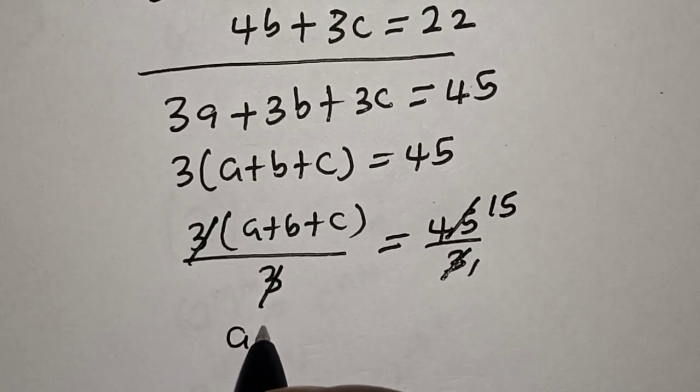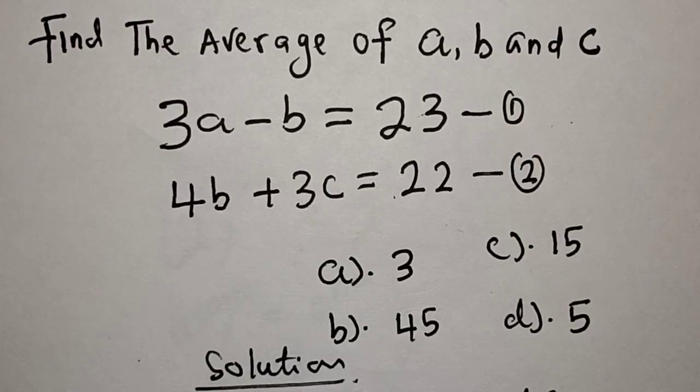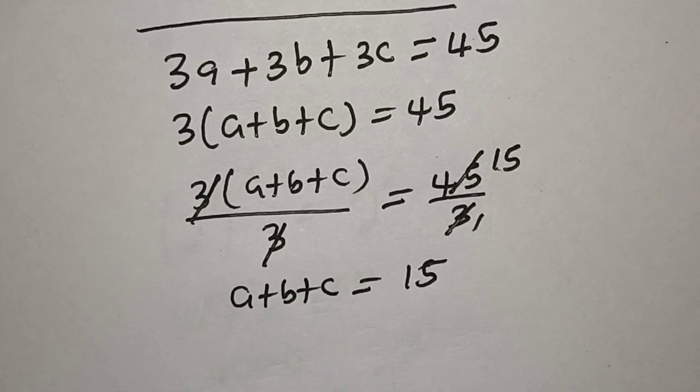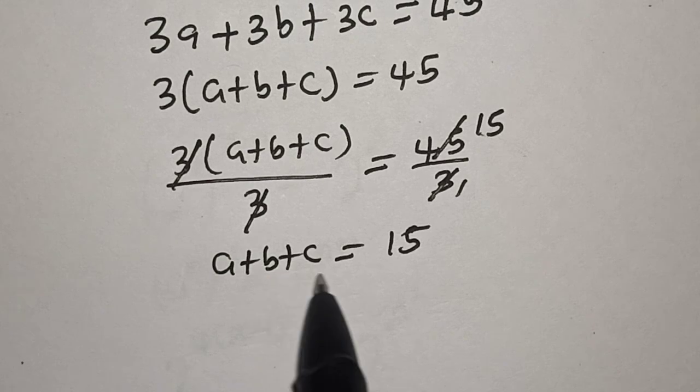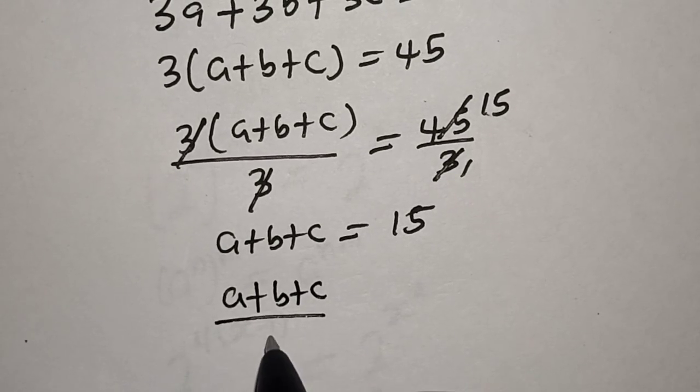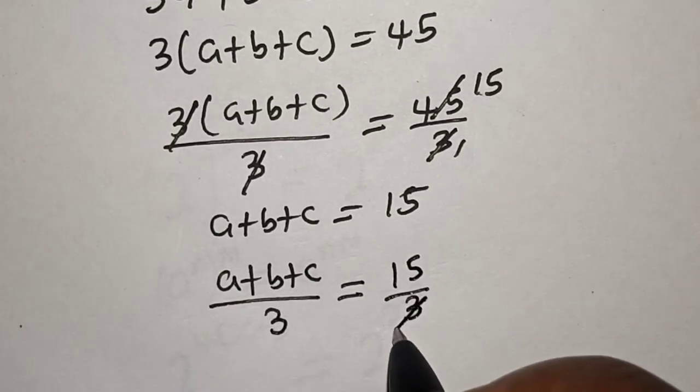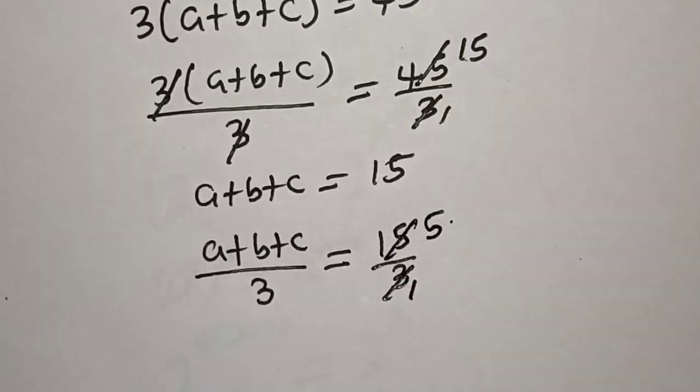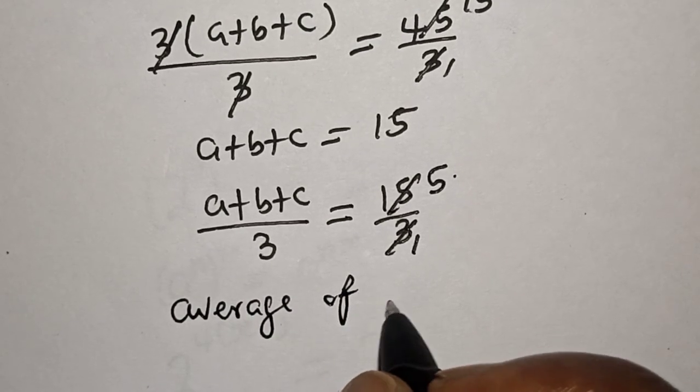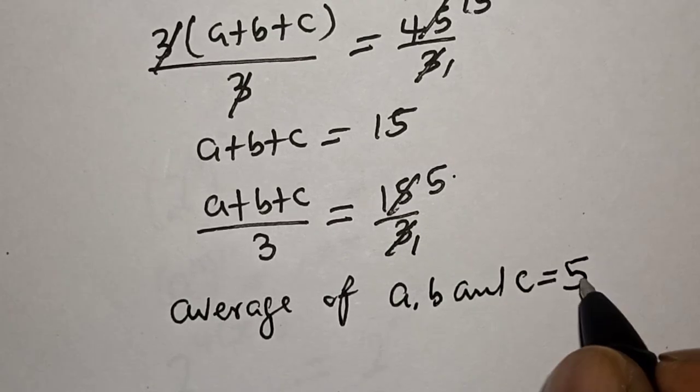Now, we have A plus B plus C is equal to 15. But the question says, find the average of A plus B plus C, which is A plus B plus C over 3 is equal to 15 over 3. Therefore, the average of A plus B plus C is equal to 5.